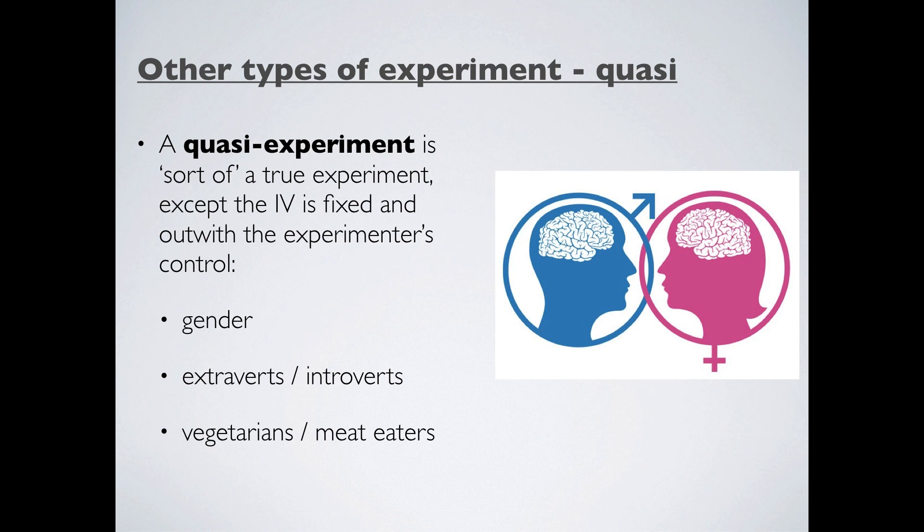But the thing is about a quasi-experiment, because we can't really control the IV, that means the participants are in pre-existing groups. We haven't randomly allocated them into anything, which is a big flaw. It means, ultimately, that there's no randomization of extraneous participant variables as well. So it might just be that our vegetarians have a better score on their IQ test. But what if it was just that, just through chance, our vegetarians had a bigger group of super geniuses? Because we haven't randomly allocated, we haven't gotten around that problem. So, therefore, it could be another confounding variable.